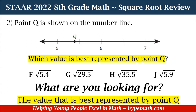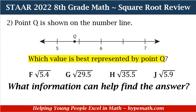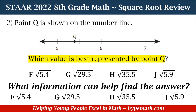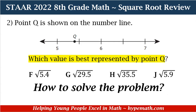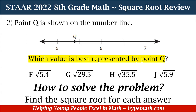Now that we know what we're looking for, our second important question is: what information can help us find the answer? In order to solve this problem correctly and know where Q is on the number line, we have to find the square root of all of our answer choices. In order to solve the problem, we are going to find the square root of each answer.